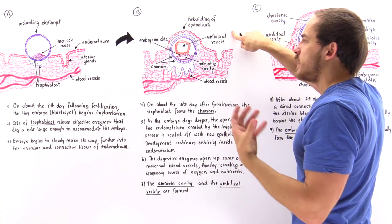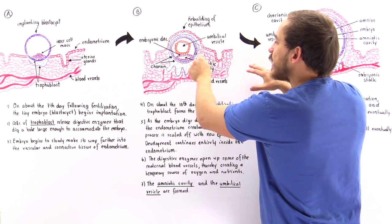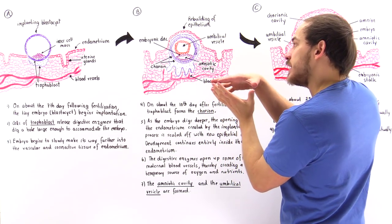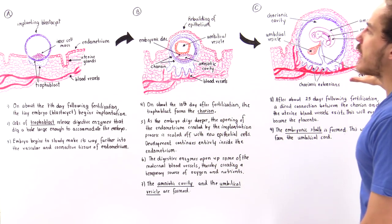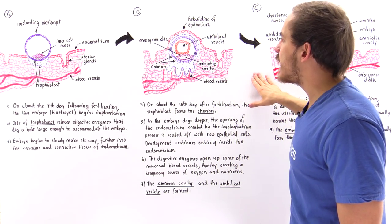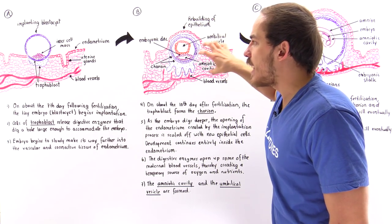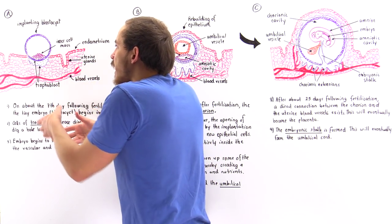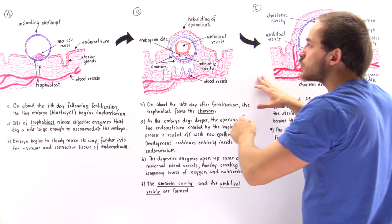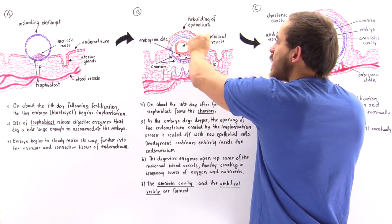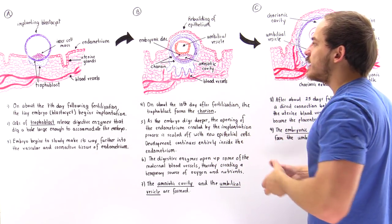We also form something called the umbilical vesicle, which will eventually become part of the umbilical cord. The inner cell mass opens up and creates an internal cavity known as the amniotic cavity, which will eventually be the place where the embryo is found. Blood clots form within the implantation area, and new epithelial cells reform the epithelium so that the entire embryo is now found entirely inside the endometrium.